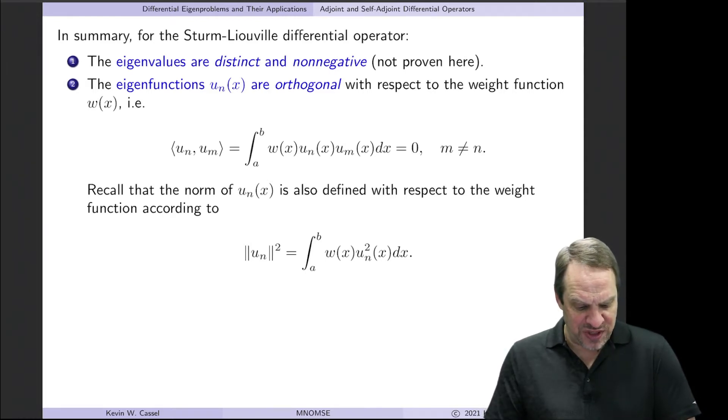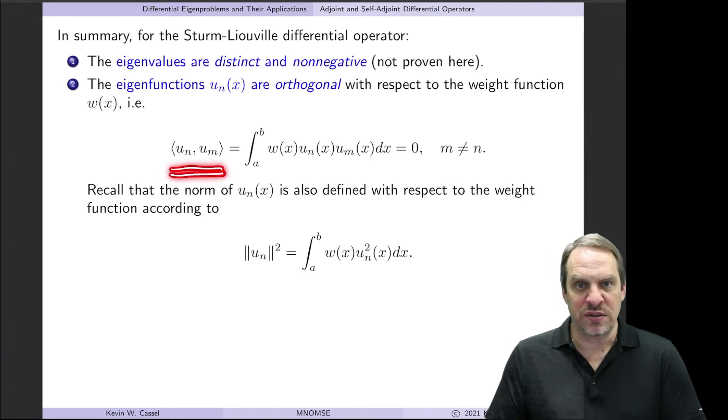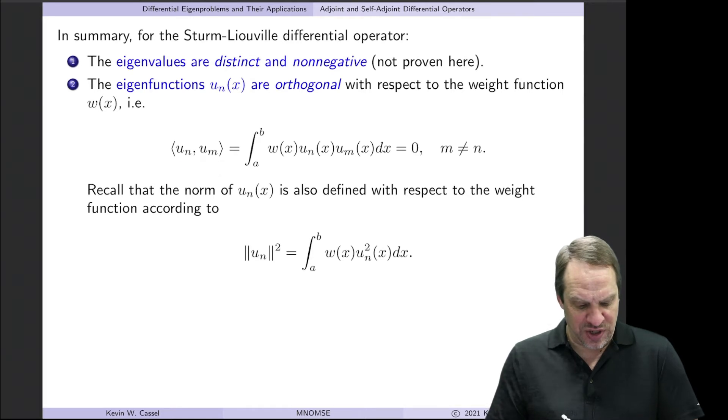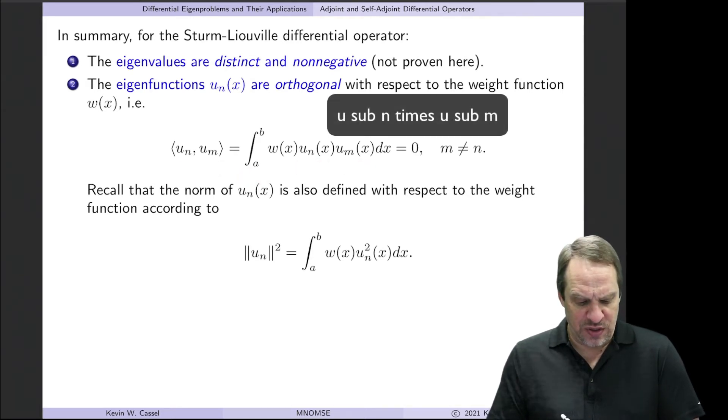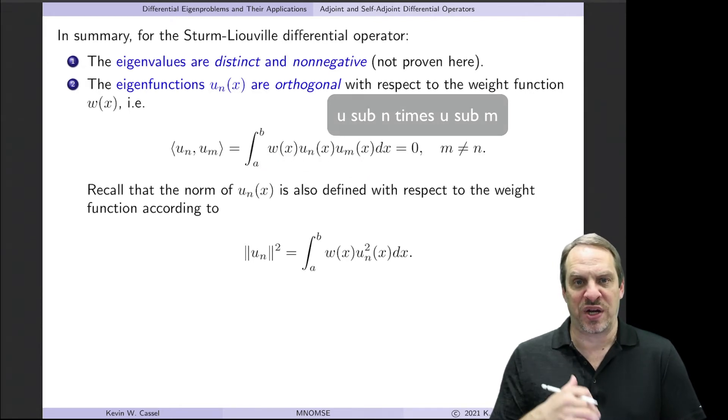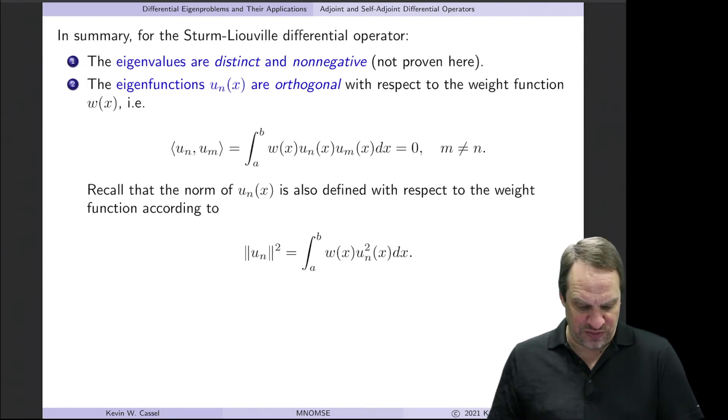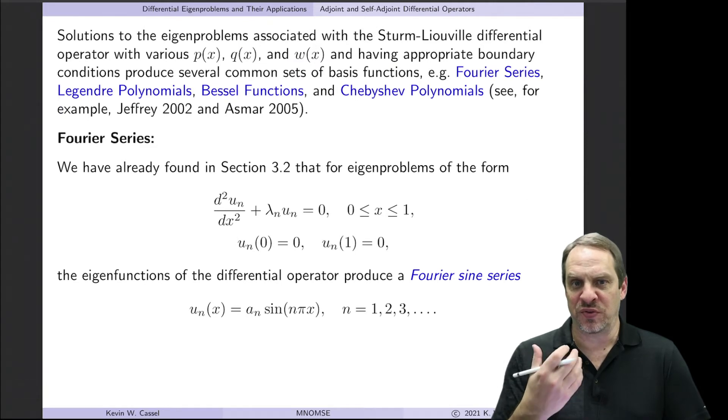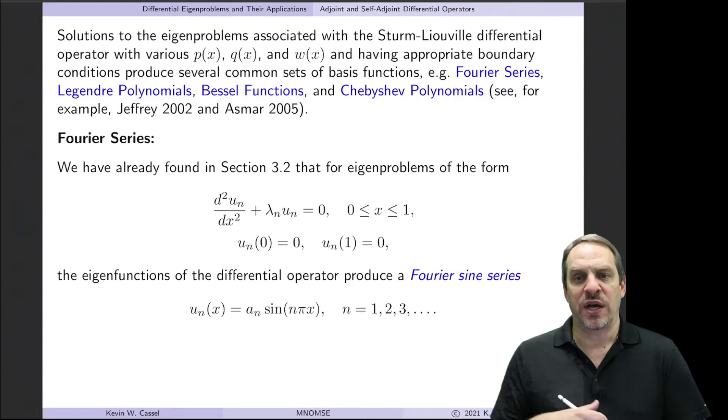So remember, orthogonality means that the inner product of two functions, in this case two of the eigenfunctions, u sub n and u sub m, is equal to zero. And for the case of functions, the inner product corresponds to the integral of u times m times w. So it's the inner product with respect to the weight functions. So again, what we're going to do is look at some different p's, q's, and w combinations to see what types of eigenfunctions we get and the corresponding Sturm-Liouville differential equations. And you'll see some familiar names along the way.